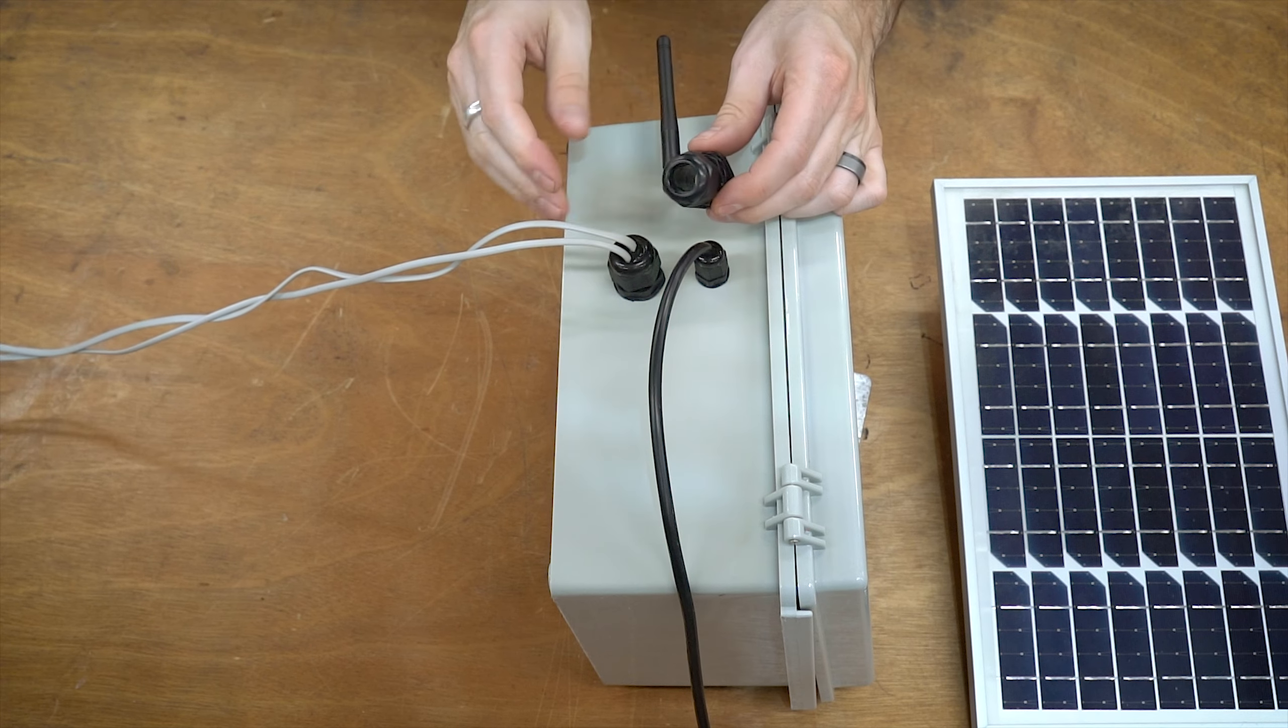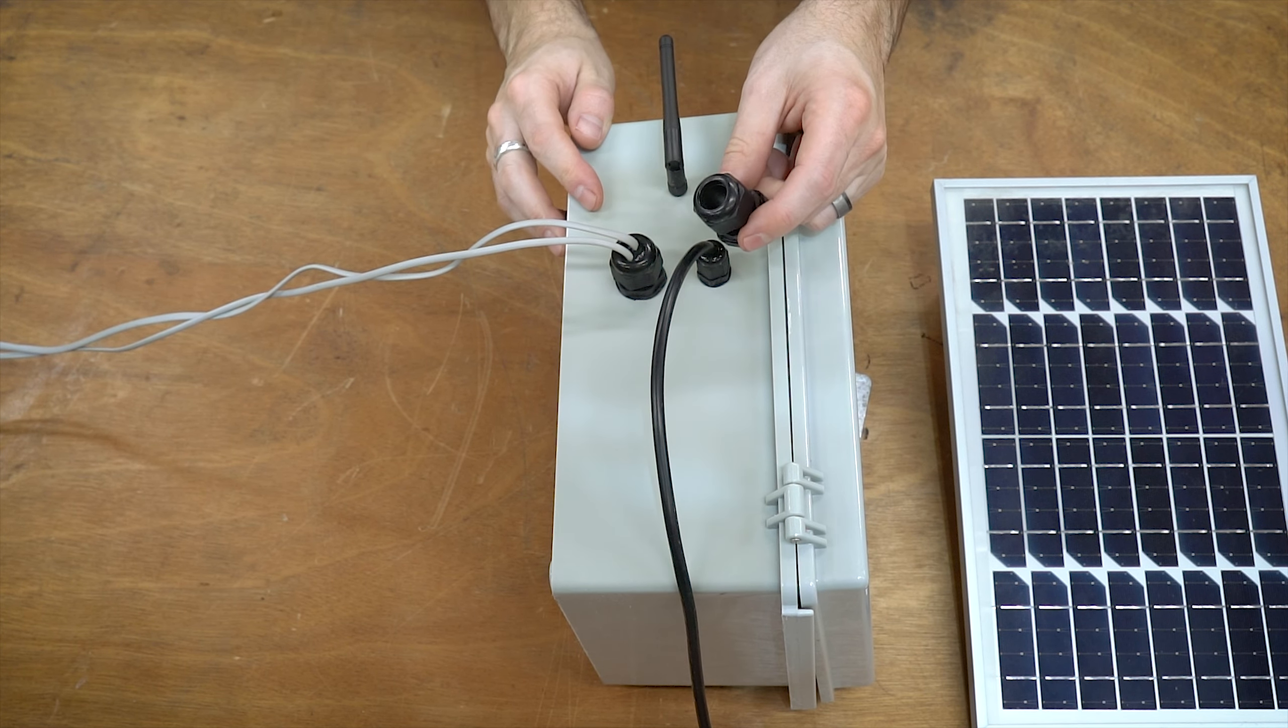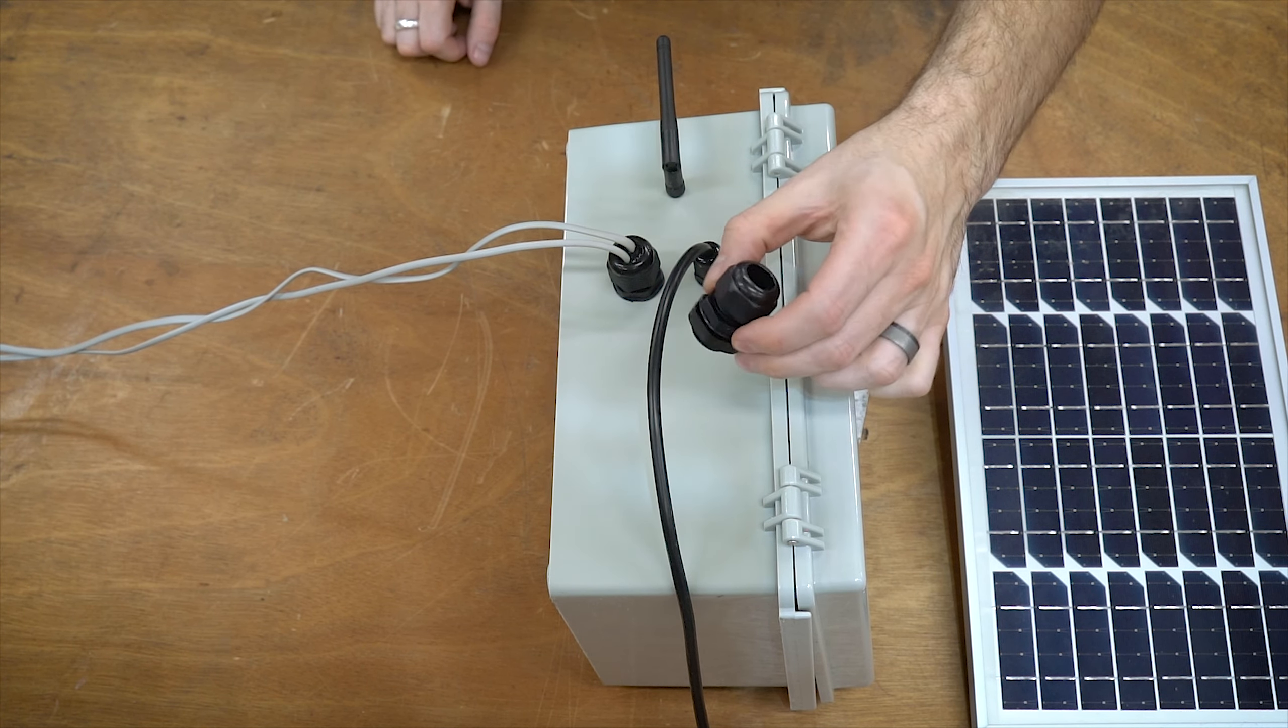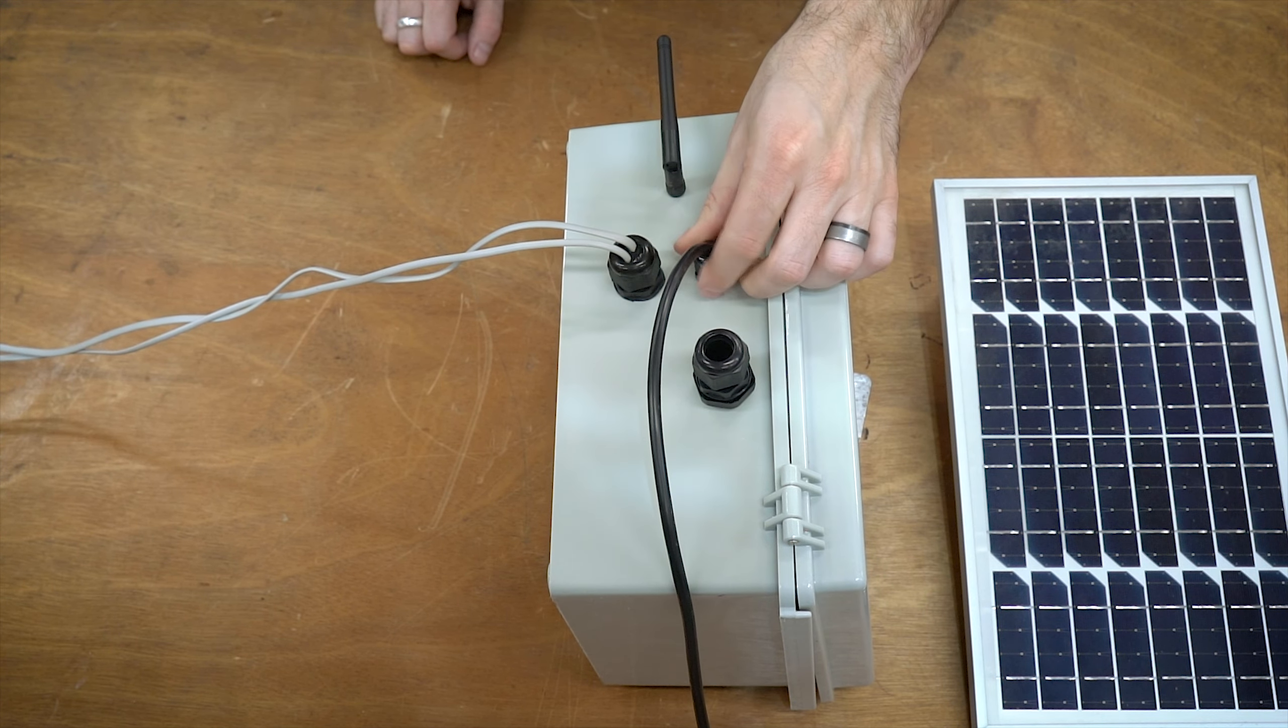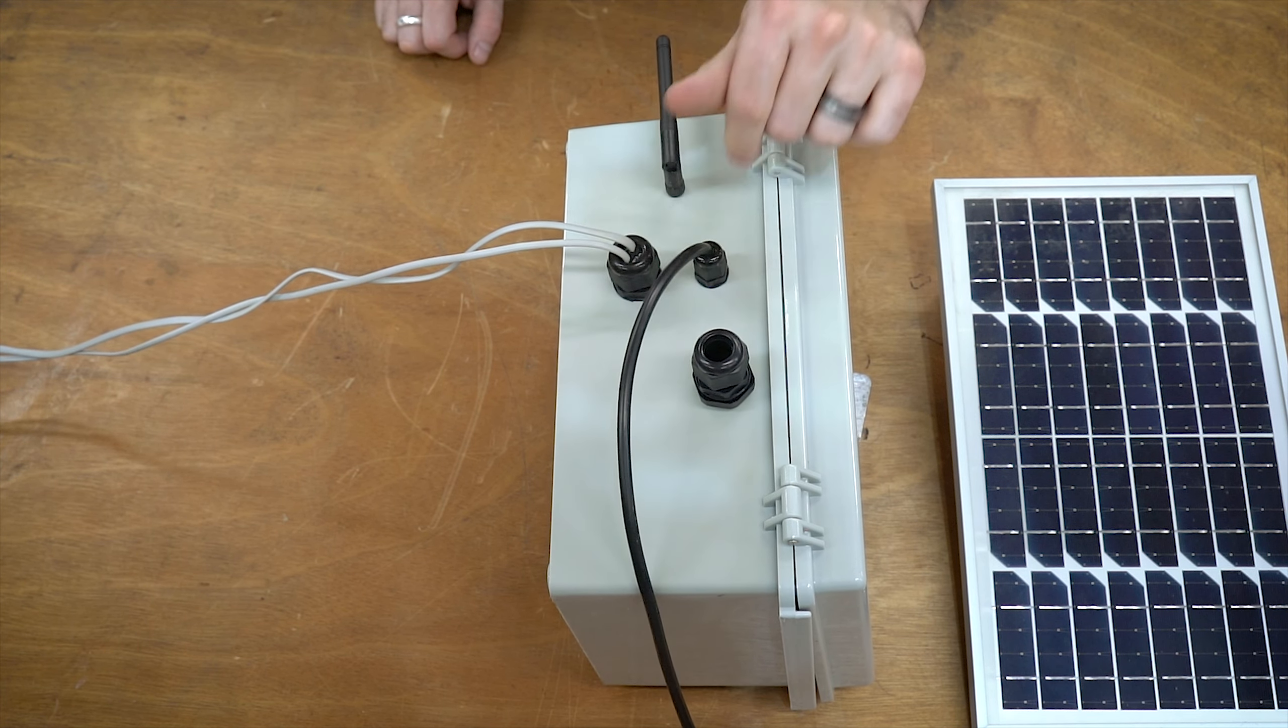So cable glands are fantastic. I have an assortment of them somewhere. You can get these in a nice little assortment on Amazon, and they come in handy for projects like this all the time.